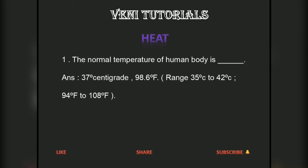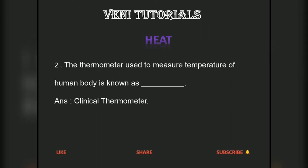The normal temperature of the human body is 37 degrees centigrade or 98.6 degrees Fahrenheit. The thermometer used to measure the temperature of the human body is known as a clinical thermometer.